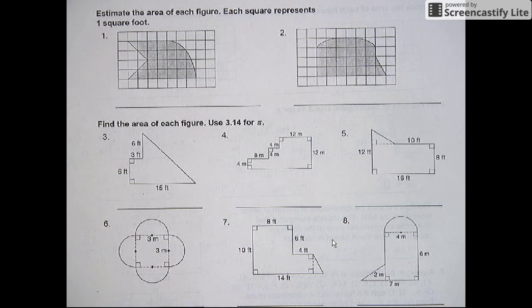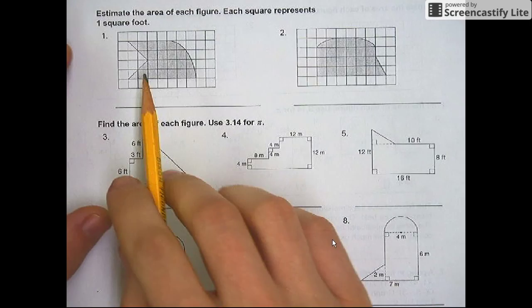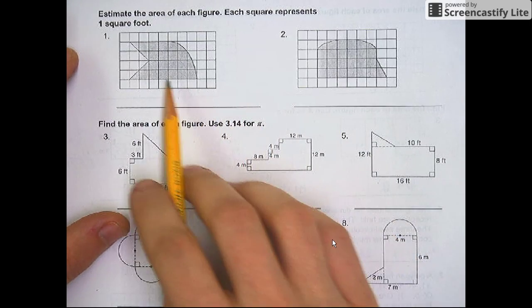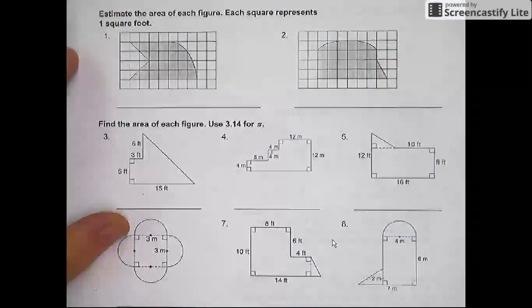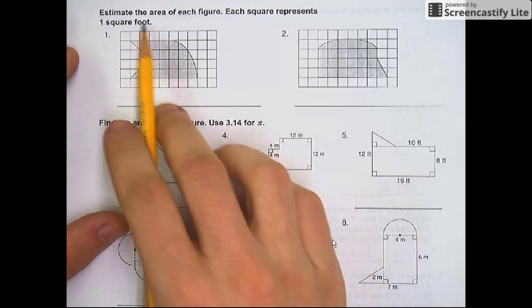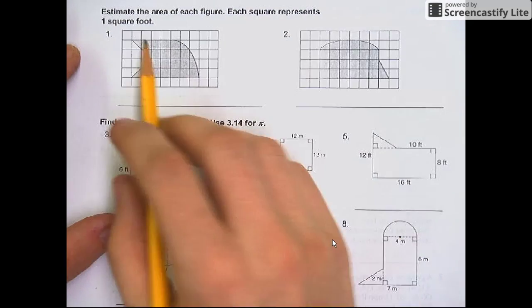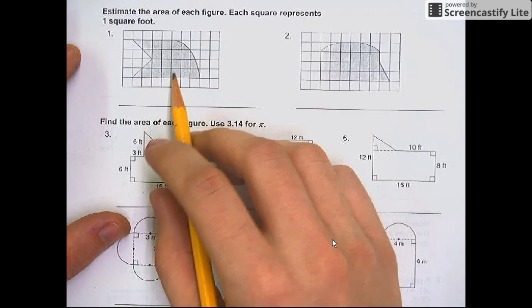Now we are on side MP. We are doing numbers 1 and 2, where again we are estimating the area. The estimating just means that we can count the squares. Each square is 1 square foot. Let's count them.